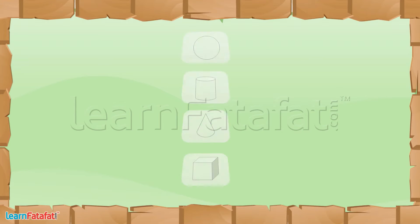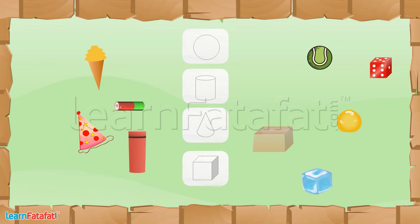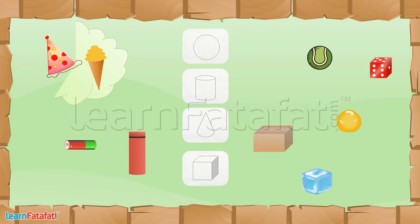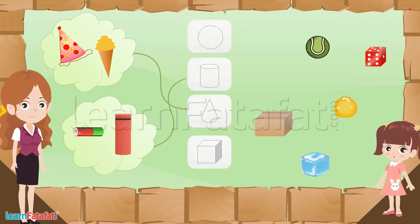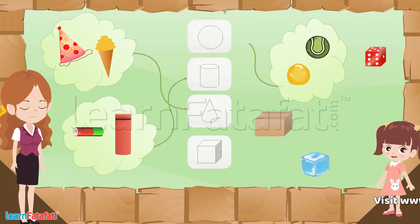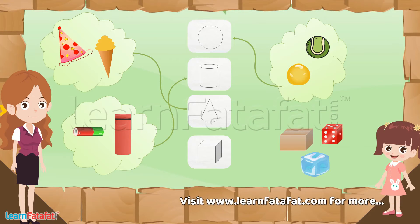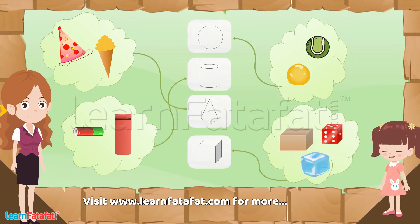I have also drawn these shapes — see these things. Here the birthday cap and the ice cream cone match with this shape. So can you make a pair of similar shapes? Bottle and battery match with this shape. Ball and Ladoo match with this shape. Dice, box and ice match with this shape.